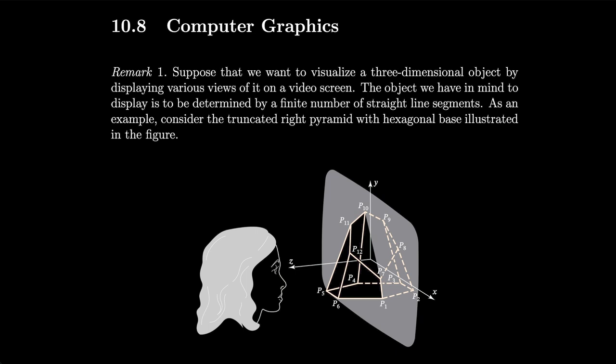As an example, consider the truncated right pyramid with hexagonal base illustrated in the figure. We take the pyramid and display a number of straight line segments so that we can visualize this three-dimensional object in 2D on a flat screen.